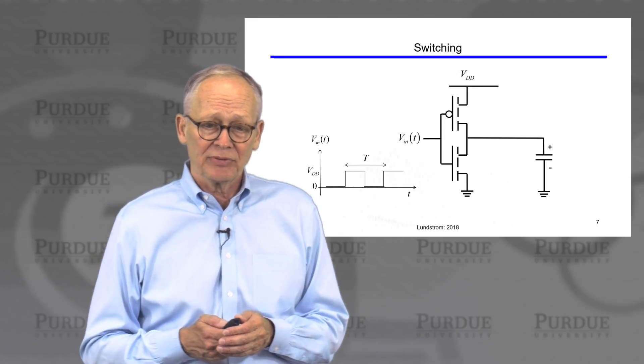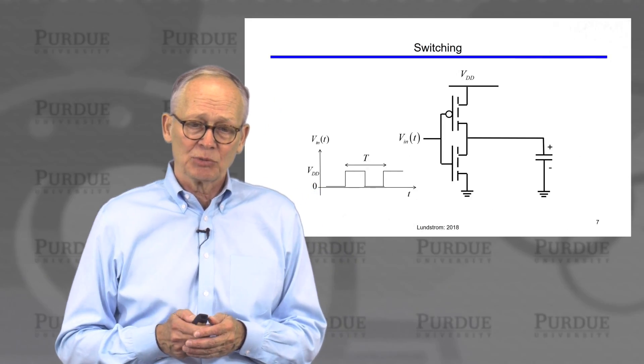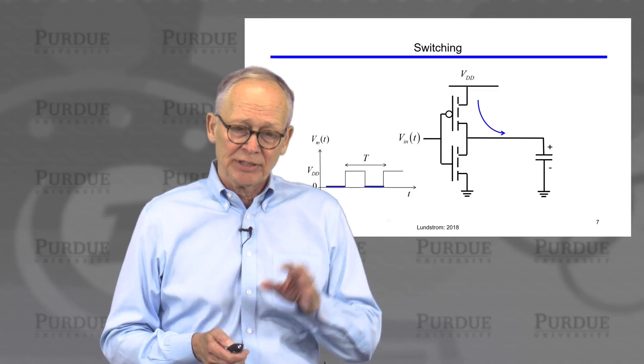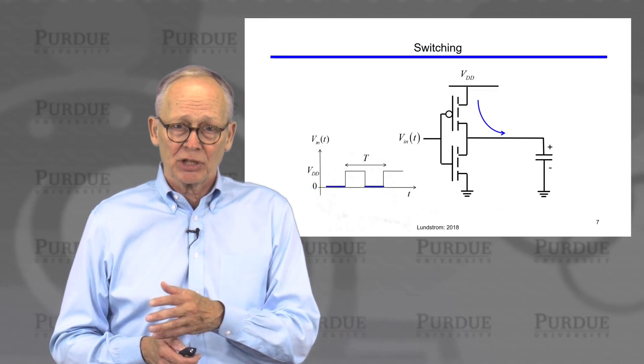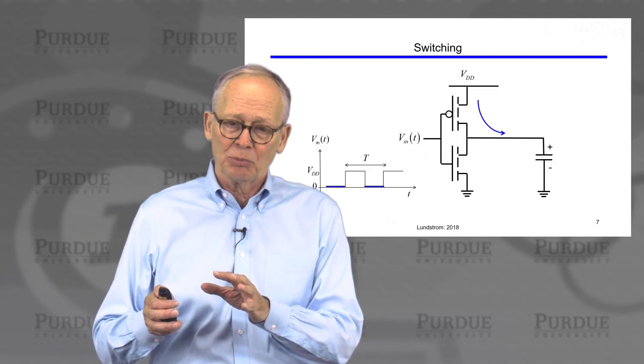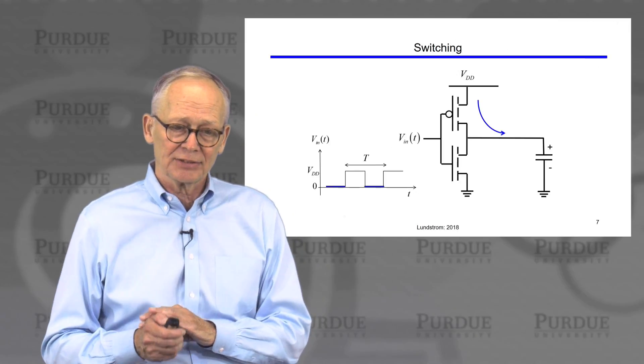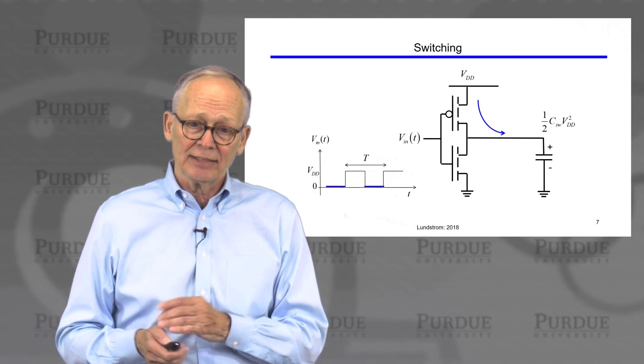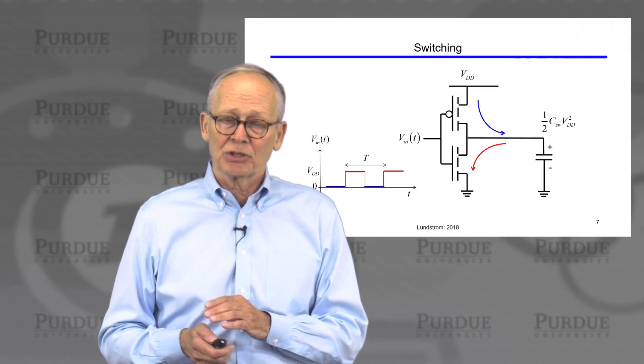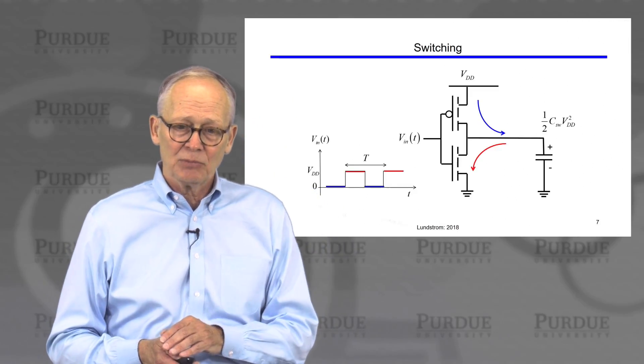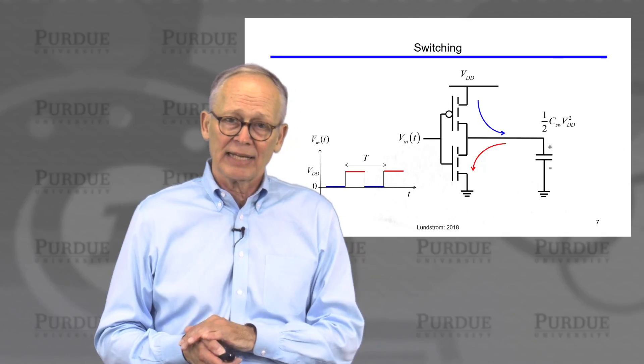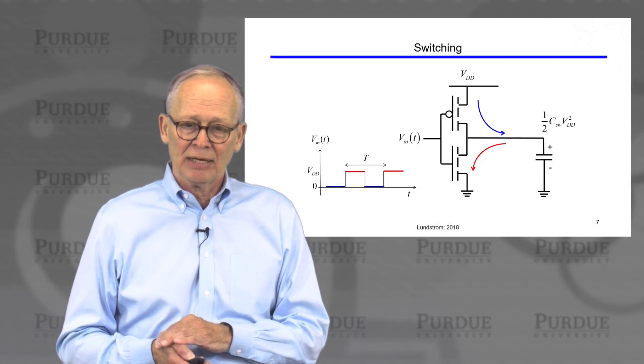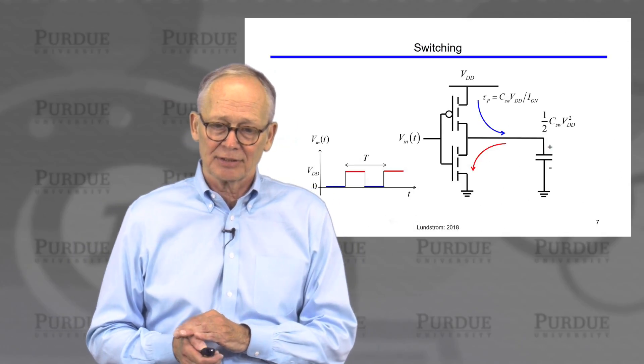We also talked briefly about how this device operates when we switch it. When the input is low, we pump charge into the capacitor at the output node through the PMOS transistor. We store energy, one half CV squared, in the capacitor. When the input goes high, we switch on the NMOS transistor, we pull all of that energy out, we dump it to ground, and we return the capacitor to zero.